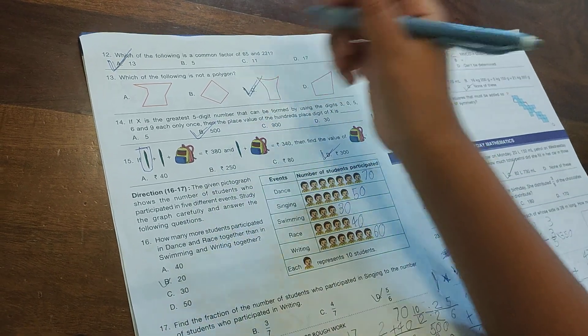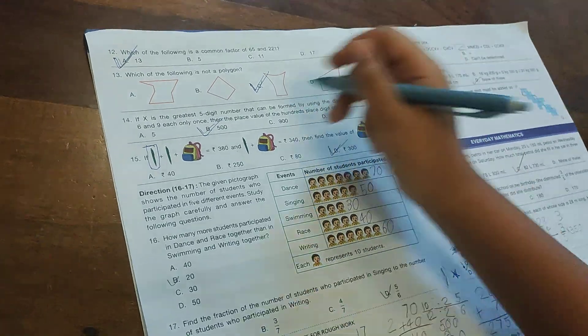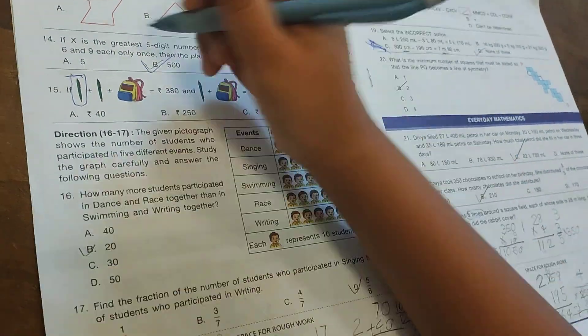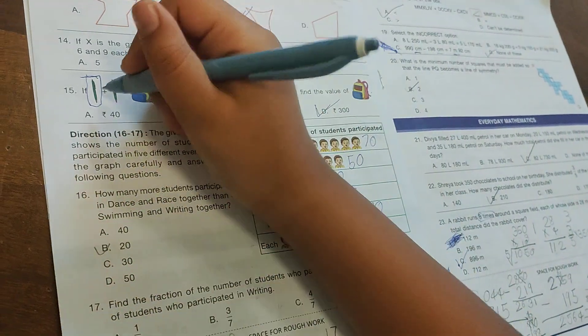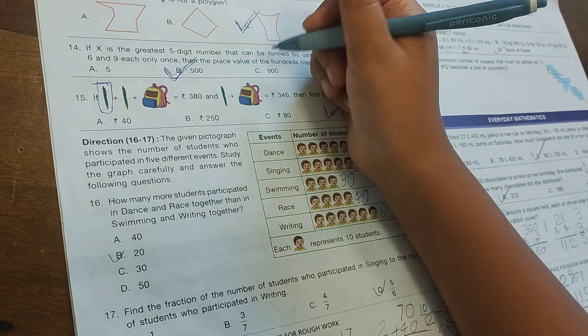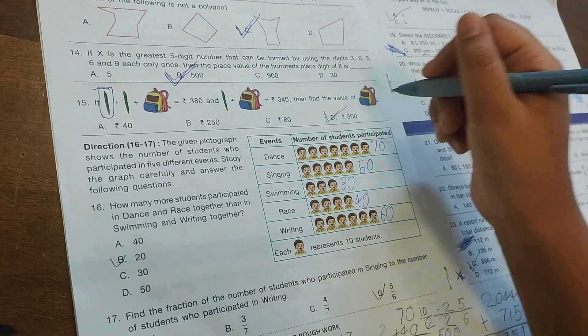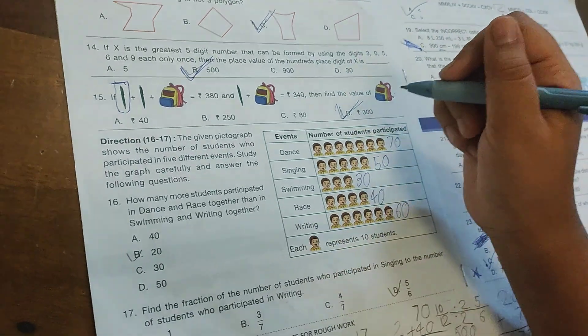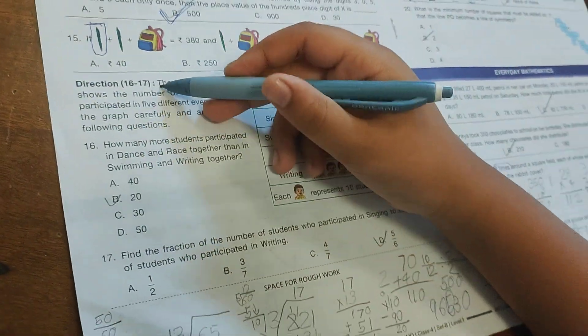If X is the greatest 5-digit number that can be formed using 3, 0, 5, 6, and 9 once, what is the digit at the hundreds place of X? The answer is 5, with place value 500. If pen plus school bag equals 380 and pen plus pencil equals 340, then find the value of the bag. The answer is 300.